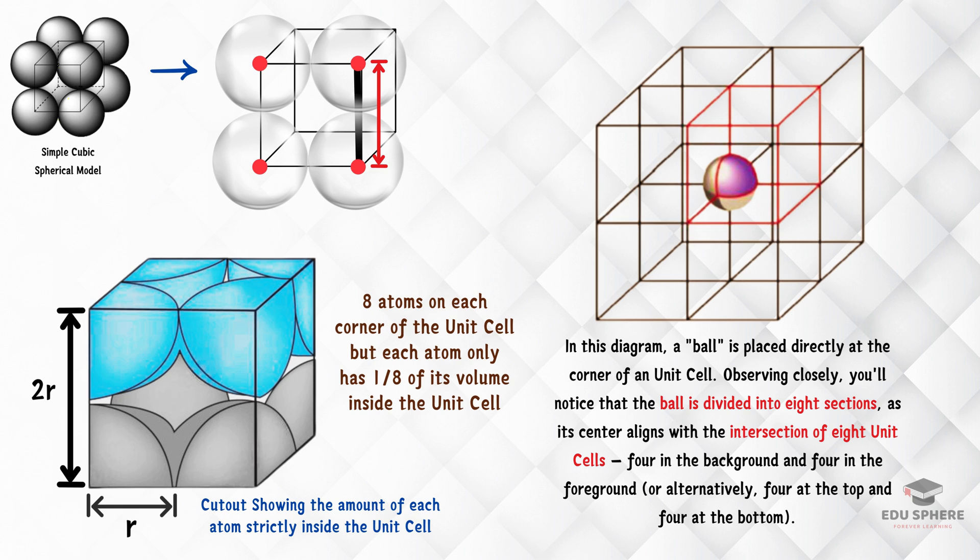That's why we only count one-eighth of a sphere for each corner of the unit cell. But there are eight corners, each with one-eighth of a sphere. So, if we add them all up, we get one whole sphere. Therefore, there's just one complete sphere inside each simple cubic unit cell.